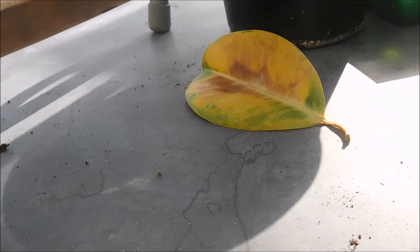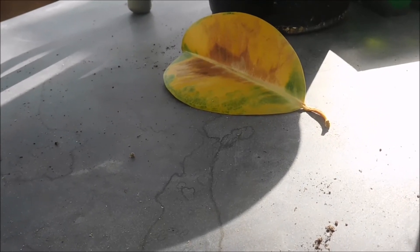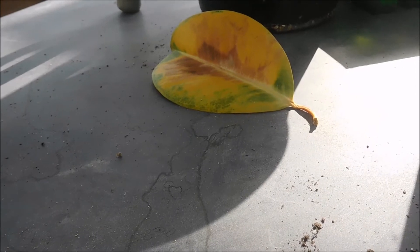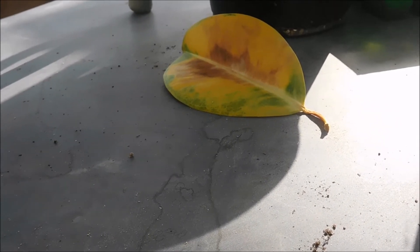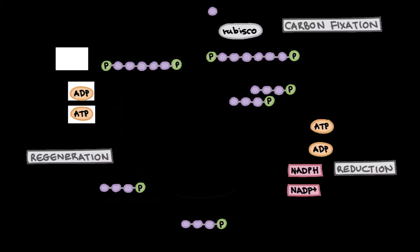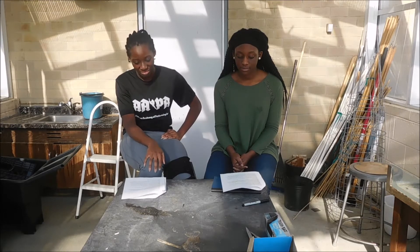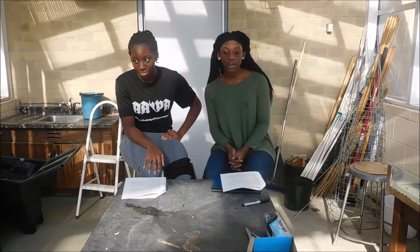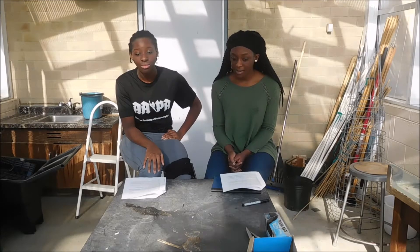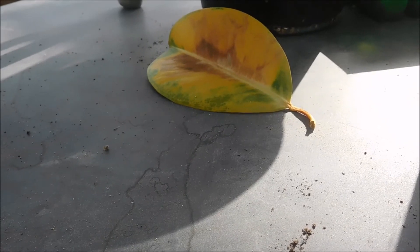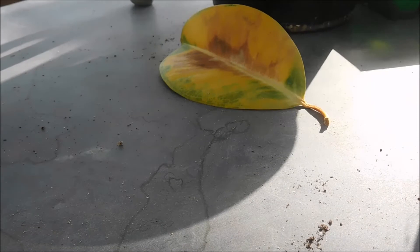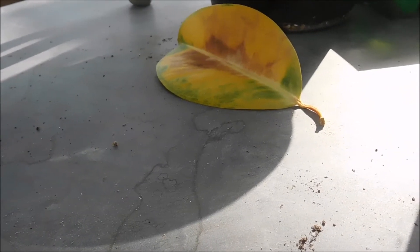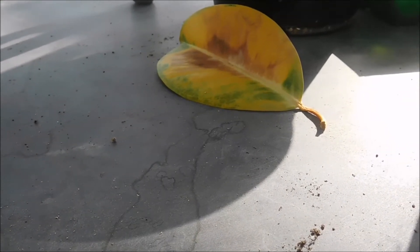Now let's talk about the Calvin Cycle. It occurs in the stroma of the chloroplast, and uses NADPH and ATP from the light reactions to convert CO2 into sugar. In the first part, the CO2 reacts with RUBP — a compound that has five carbons — to produce G3P, which is basically just three carbons and a phosphate group. Rubisco is the enzyme used. And to make this reaction happen, we use the ATP and NADPH from the light-dependent reaction. We also need to make more RUBP, and to do that we use some of the G3P we just made — that's what makes it a cycle.